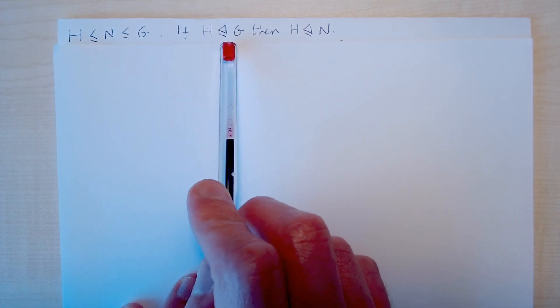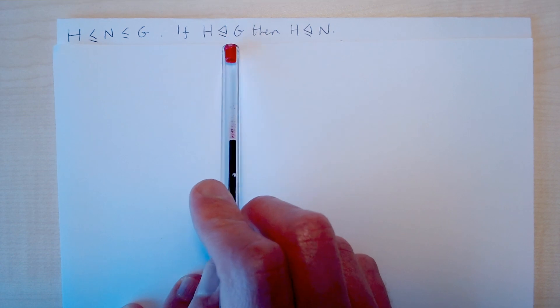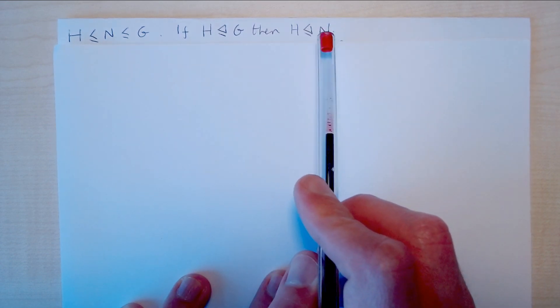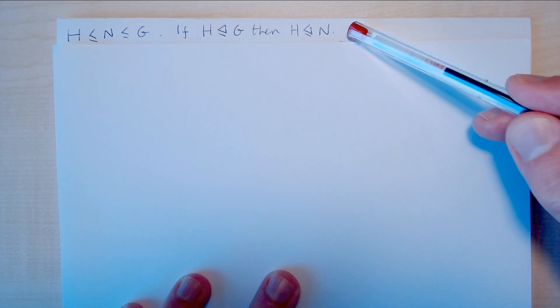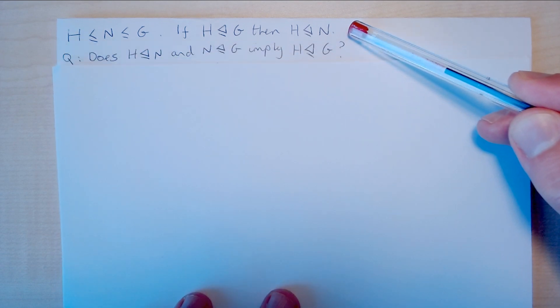It's fairly obvious to see that if H is a normal subgroup of G, then H is also a normal subgroup of N. Any definition of the normal subgroup will give you this result quite easily.